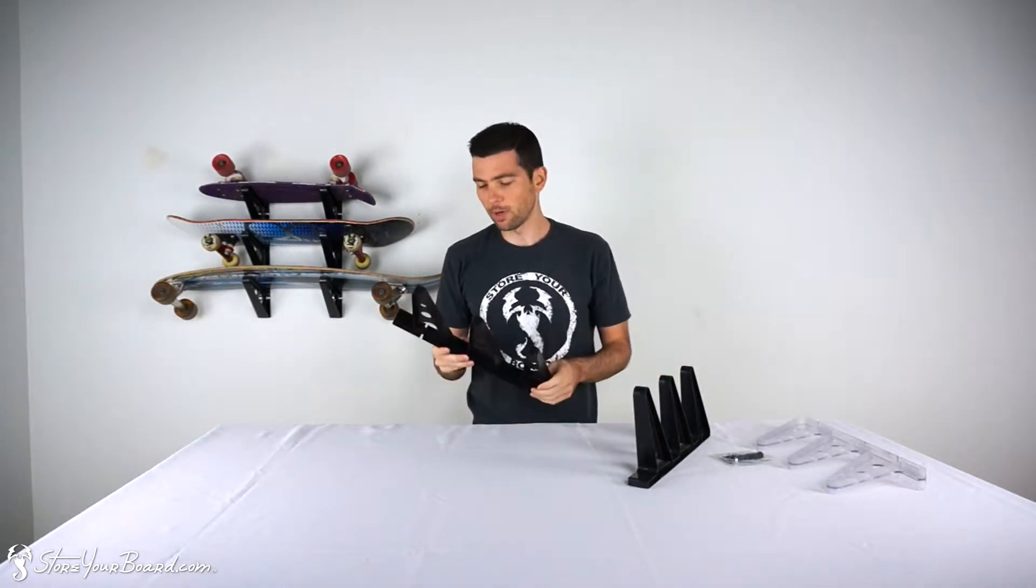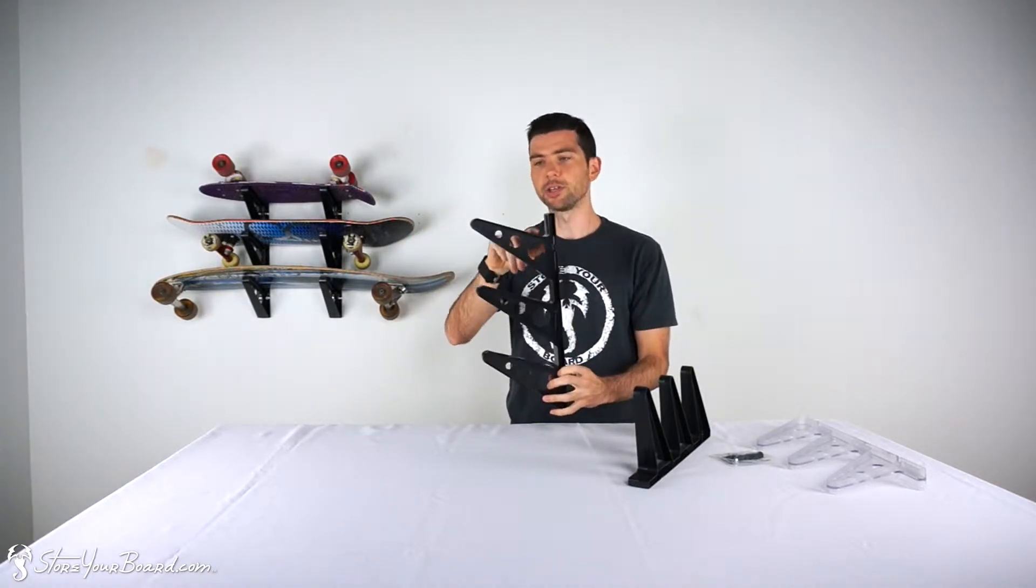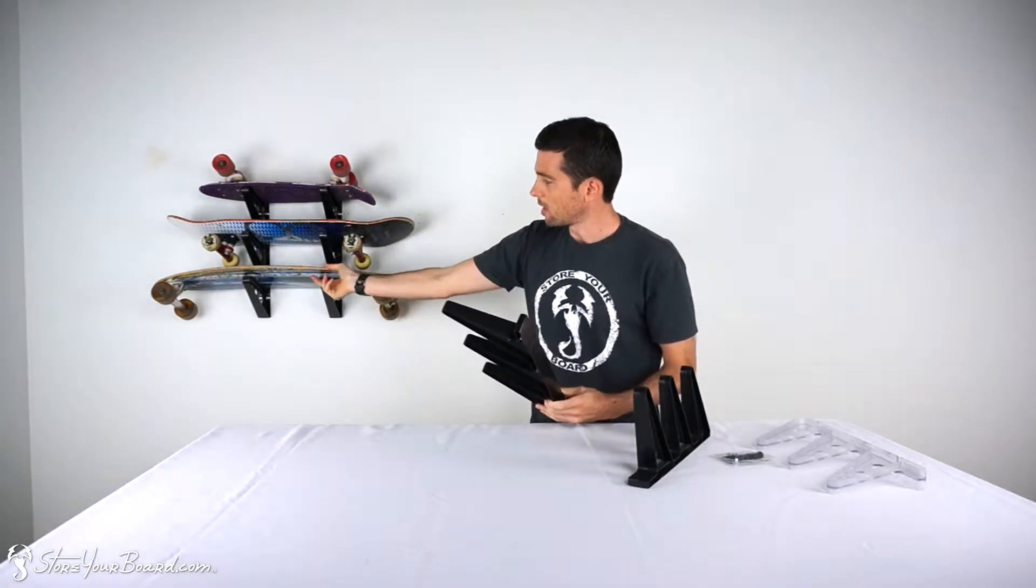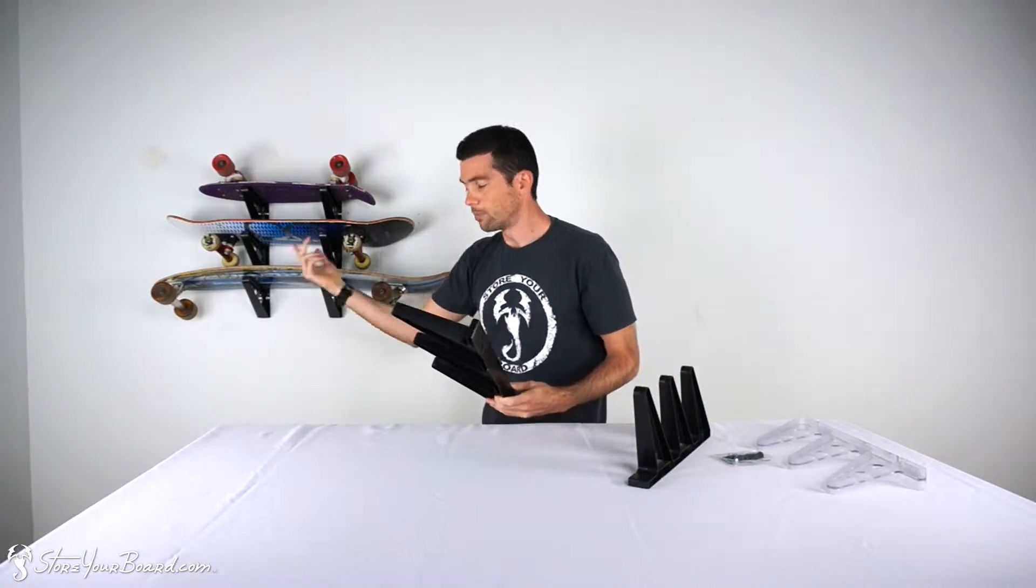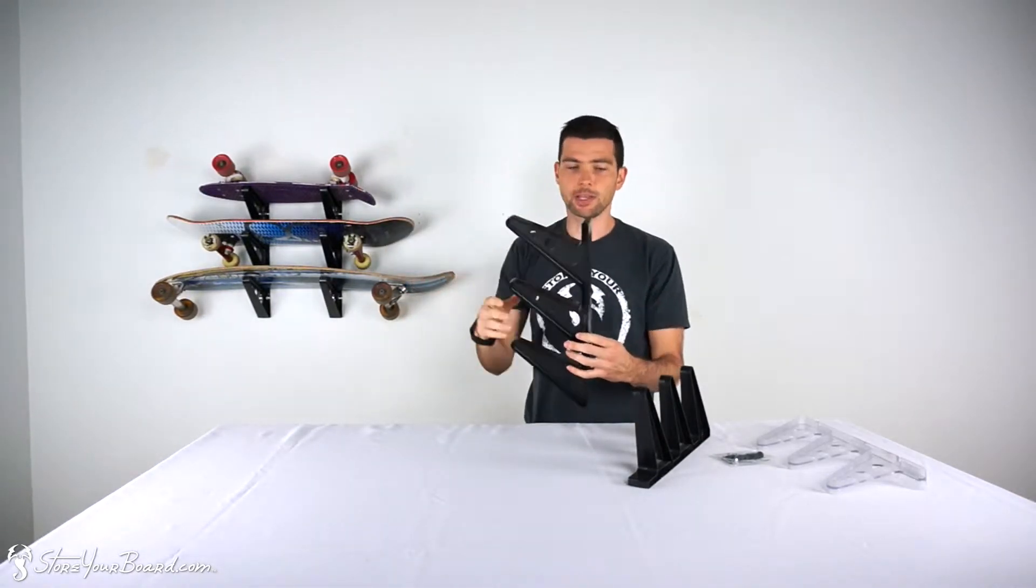The Trifecta Rack is made from ABS plastic. It's three different rungs. Each of these are about six and a half inches long. So even with a longboard, if it's a little bit wider, it hangs out, but no problem. Easily stored. There's a bit of an angle on it, so your boards use natural gravity and it stays right in the rack.